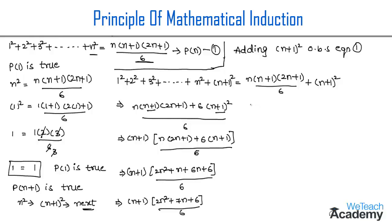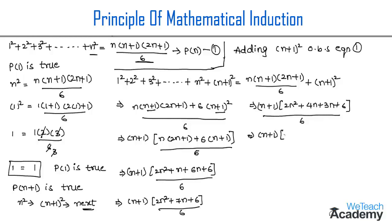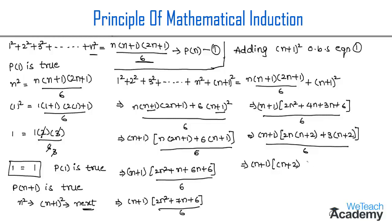Factorizing 2n² + 7n + 6, we write it as 2n² + 4n + 3n + 6. Taking 2n as a common factor from the first two terms gives 2n(n+2), and taking 3 as a common factor from the last two terms gives 3(n+2). So the expression becomes (n+1)(n+2)(2n+3) / 6.